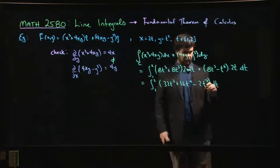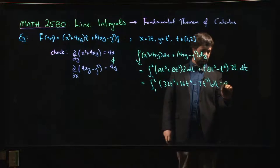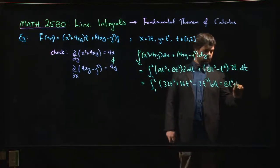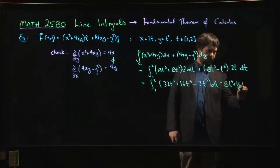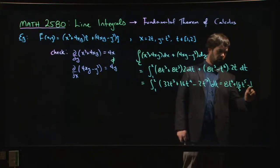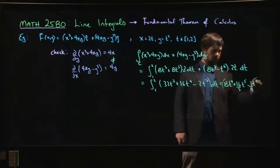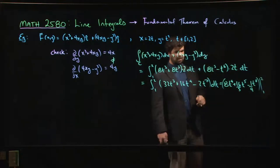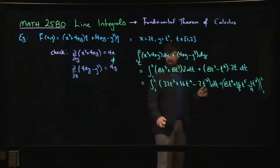What are we going to get? 8t to the 4, 16 over 5 t to the 5, minus 1 over 4 t to the 8th. And we're evaluating that from 1 to 2, which is going to be a bit of a mess.